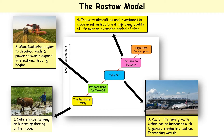Then we move on to the drive to maturity stage, where industry diversifies - diversifies just means you get lots of different kinds of industry emerging. Investments may have been made in infrastructure, which is things that crisscross the country like gas, electricity, water supplies and telephone wires. And people's quality of life is improving within the country.